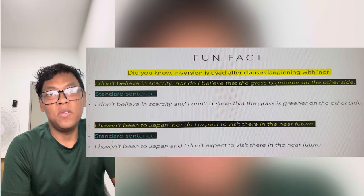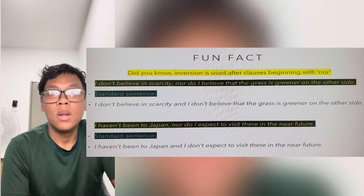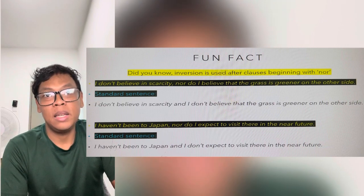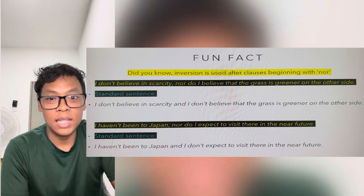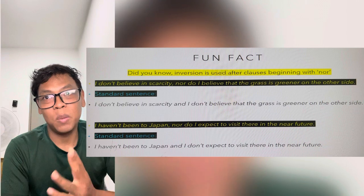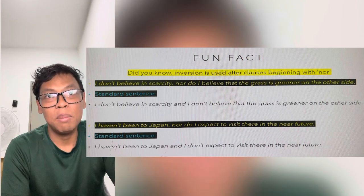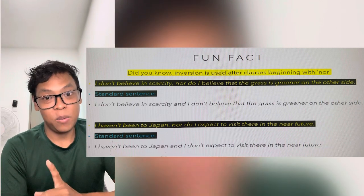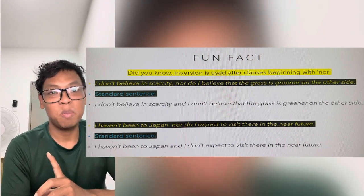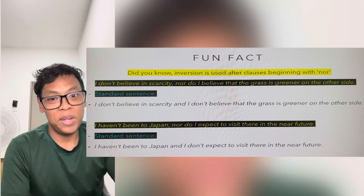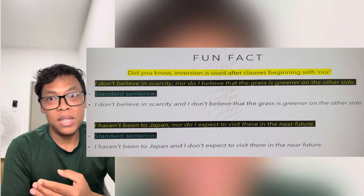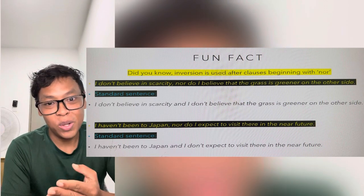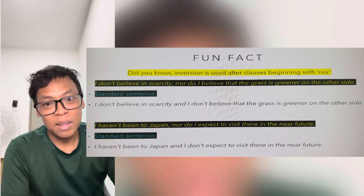Did you know inversion is used after clauses beginning with 'nor'? The standard sentence 'I don't believe in scarcity and I don't believe that the grass is greener on the other side' becomes 'I don't believe in scarcity, nor do I believe that the grass is greener on the other side.' Similarly, 'I haven't been to Japan and I don't expect to be there in the near future' becomes 'I haven't been to Japan, nor do I expect to be there in the near future.' Basically, you place 'nor' at the front and then invert.